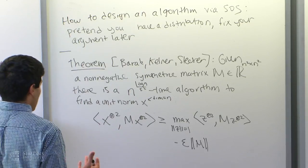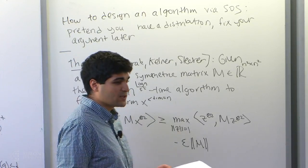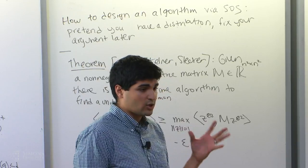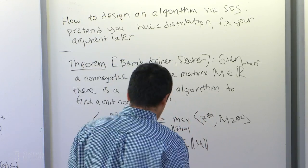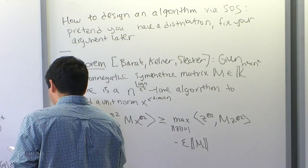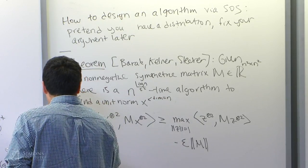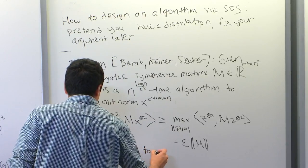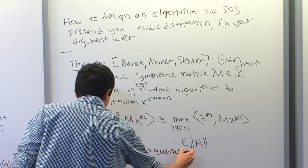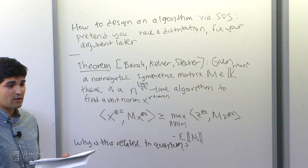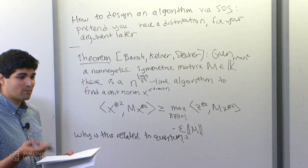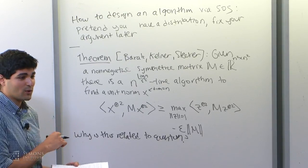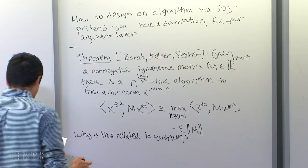As you decrease epsilon, the running time goes up but you get a finer and finer approximation to this polynomial optimization problem. This is a problem we'll solve through sum of squares. But first I want to make good on the promise of why this is related to quantum mechanics — we'll see two relationships. So why is this related to quantum? I also don't do quantum, so let me give you a non-quantum person's view of quantum.